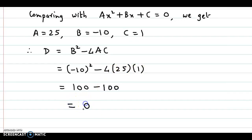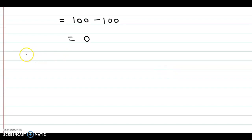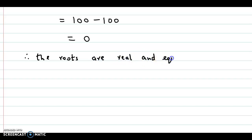We get the value of D equal to 0. If the discriminant value is 0, therefore we say the roots are real and equal. This is question number 3. Let's go to question number 4.